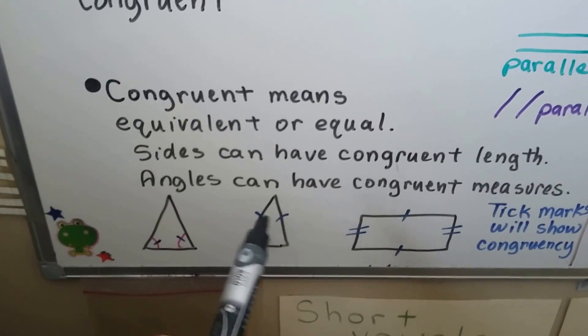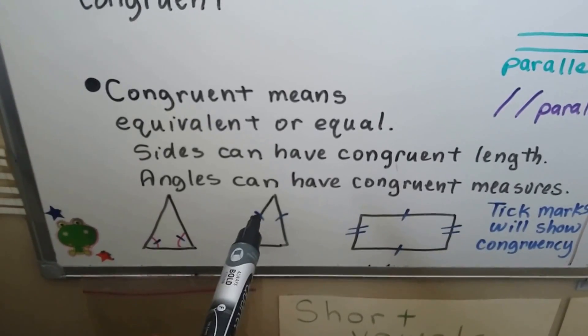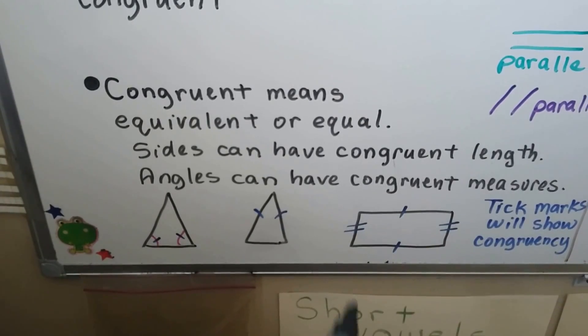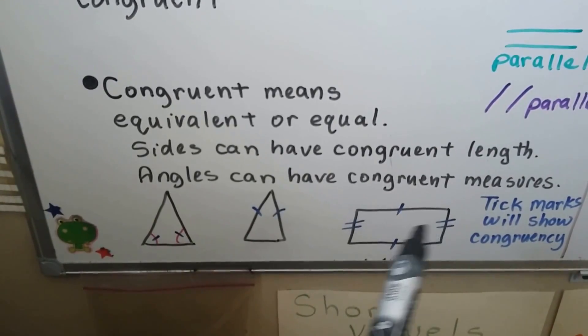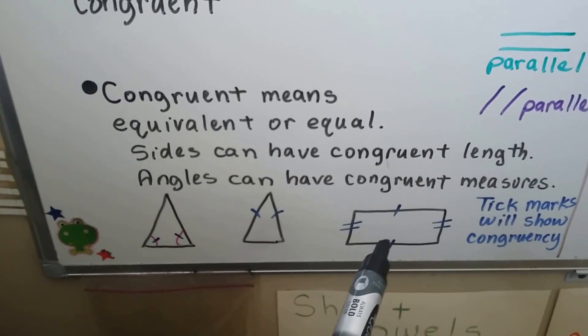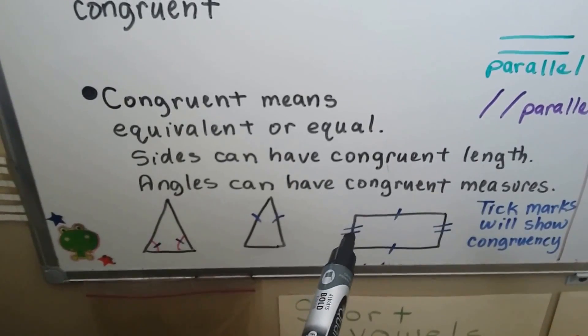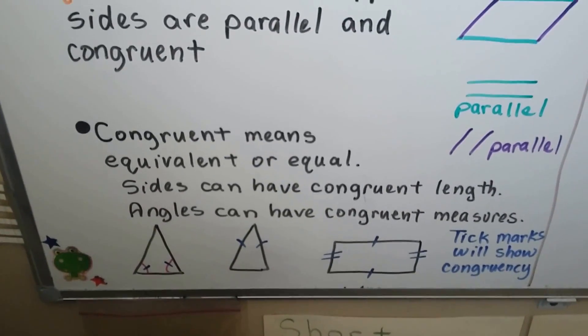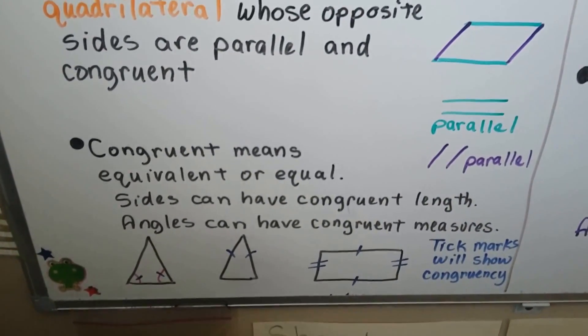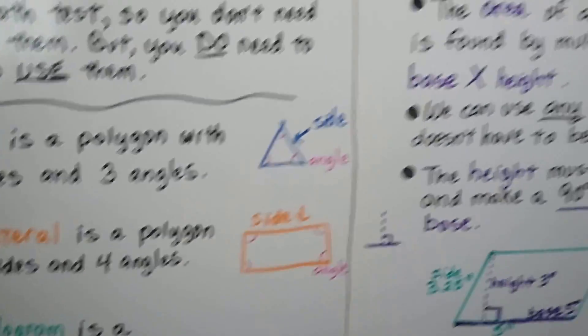If you see sides with tick marks on them, that means this side length is the same as that side length. When you see two tick marks, it tells you which ones are congruent to each other. This has got one tick mark, so it's congruent to that side. This one's got two, so it's congruent to that side. Some polygons could have three tick marks or four tick marks. It depends on how many sides the polygon has.